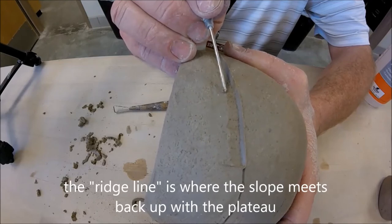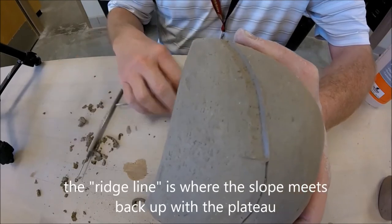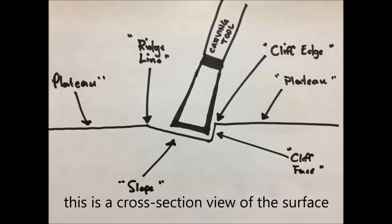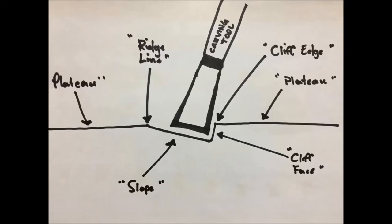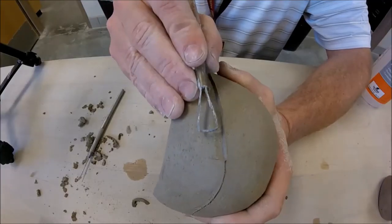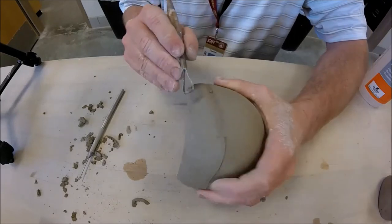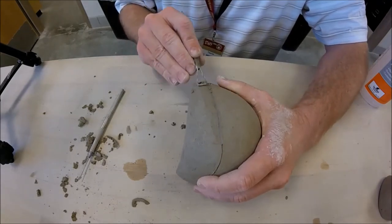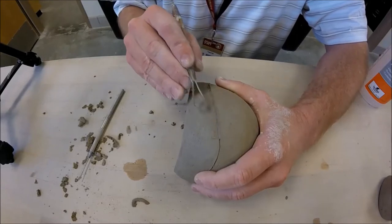That ridge line right there is what we want to get rid of next. I'm going to take the flat part of the tool and just lightly scrape on it until the ridge line goes away, until I don't see it anymore.